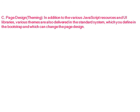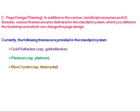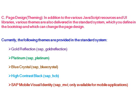Page design: in addition to the various JavaScript resources and UI libraries, various themes are also delivered in the standard system, which you define in the bootstrap and which can change the page design. Currently, the following themes are provided in the standard system: Gold Reflection, Platinum, Blue Crystal, High Contrast Black, and SAP Mobile Visual Identity — only available for mobile applications.